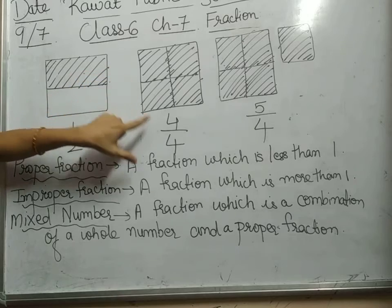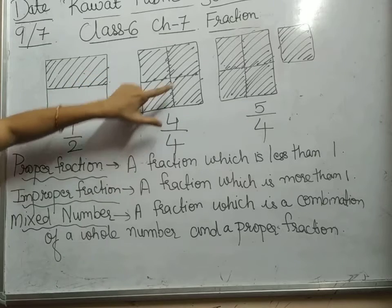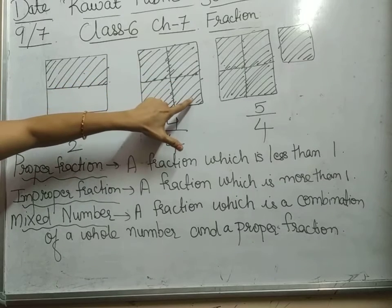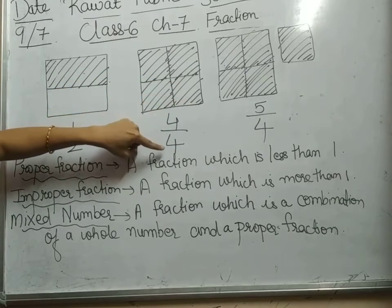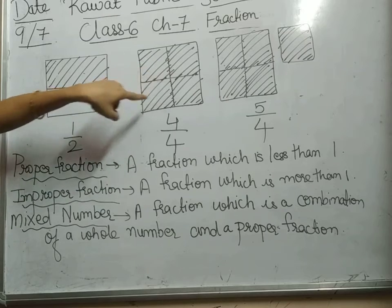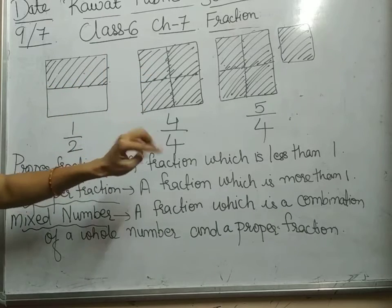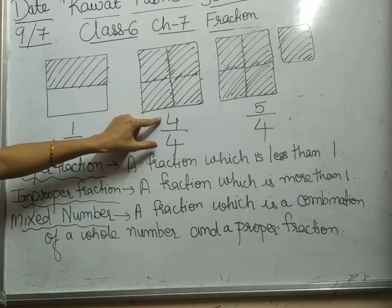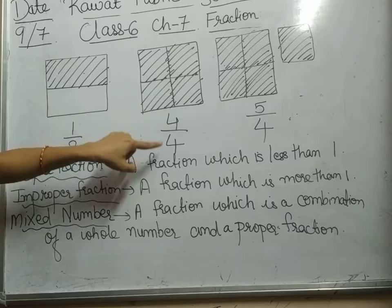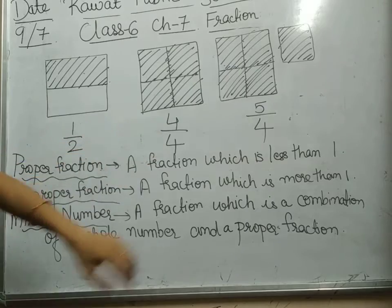Here there are how many total number of parts? There are four parts. How many shaded parts? Four parts. So, it is written as four by four.